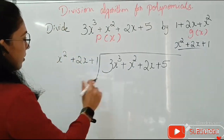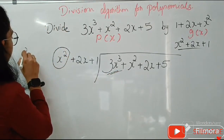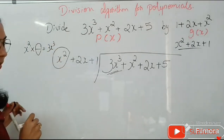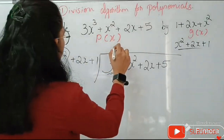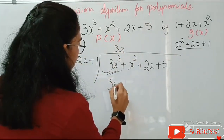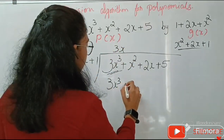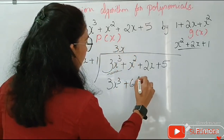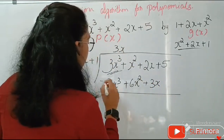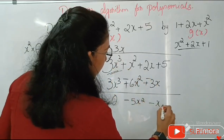Just like in the previous case, the first term of the divisor is X squared and the dividend starts with 3X cubed. We need to find a term such that X squared multiplied by that term gives 3X cubed. That term is 3X. So 3X into X squared is 3X cubed. Multiplying 3X by each term of the divisor: 3X times 2X is 6X squared, and 3X times 1 is 3X. By normal division, this gives 0, then minus 5X squared, then minus X plus 5.